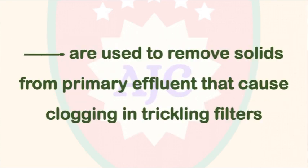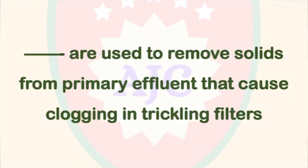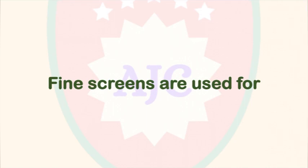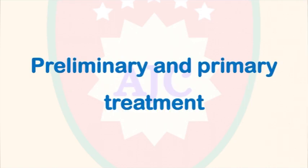Fine screens are used to remove solids from primary effluent that cause clogging in trickling filters. Fine screens are used in primary treatment to prevent clogging and damage to pipelines.